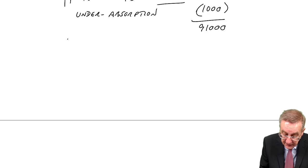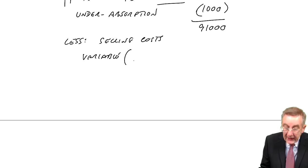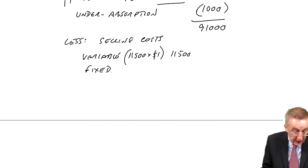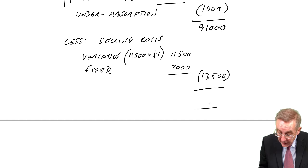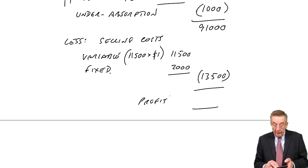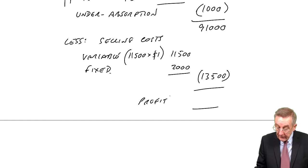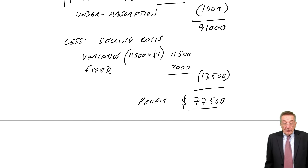For completeness, let's subtract the selling costs: the variable cost — selling costs are always based on units sold — 11,500 sold at $1 — $11,500. The fixed selling cost is $2,000 a month — total $13,500. So the final profit is $91,000 minus $13,500 — $77,500.